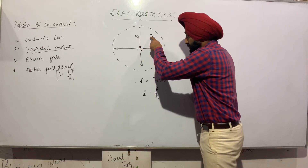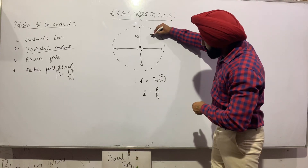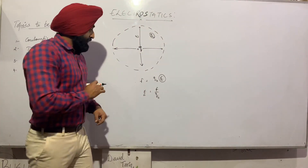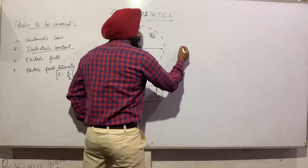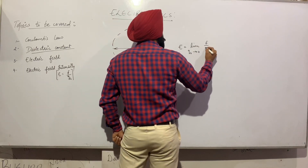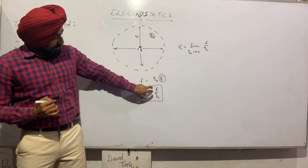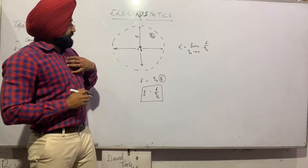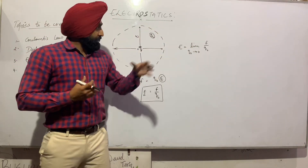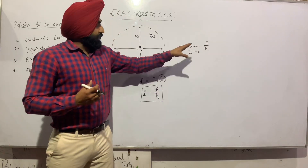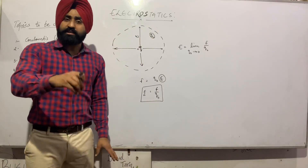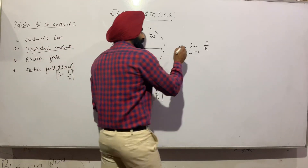Now a question may come to your mind: at this same point, Q-not also has its own electric field — yes, it will. So we don't write the expression simply as F/Q-not. Instead, we write it as: limit Q-not tends to zero, F upon Q-not. I added this limit because I want the electric field at this point to be only that of source charge Q. If Q-not is a very small charge — almost equal to zero — then its own electric field will also be nearly zero, so it will not disturb the electric field of the source charge.